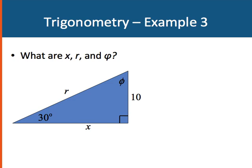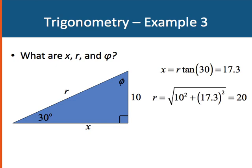We'll start out by trying to determine x. We can use the tangent function. We know that x is equal to r tangent 30. So that gives me 17.3. Now that I know what x is, I can use that in the Pythagorean Theorem. r is equal to the square root of 10 squared plus 17.3 squared, which gives me 20. And finally, I know that the sum of the angles in a triangle are 180 degrees. The right triangle is 90, so that means that phi plus 30 has to be equal to the other 90, or phi is equal to 60 degrees.